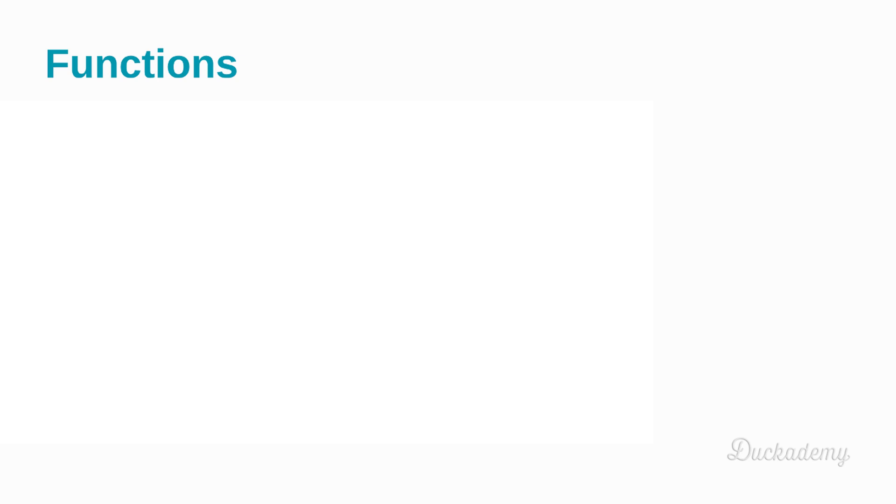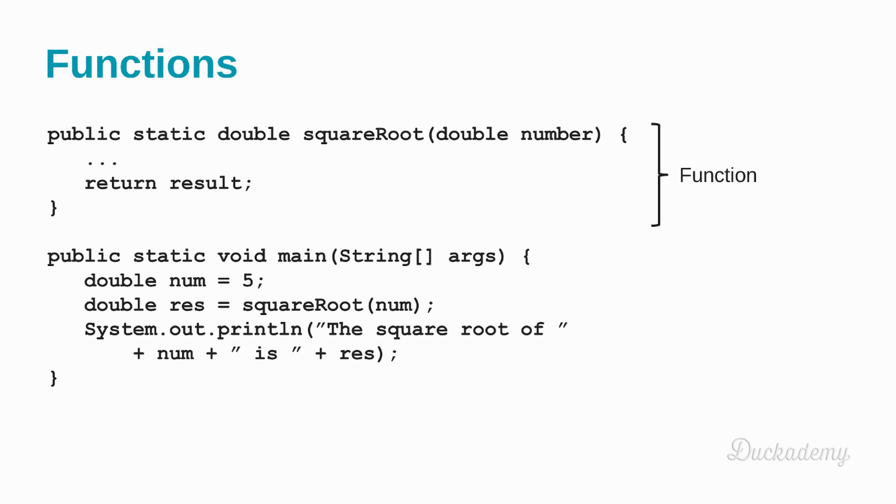So, how to create functions in Java? These are functions. This is a square root function, which produces the square root of a number. And as you might see and now understand that the main is a function as well. So, both of them have names. Square root and main are the names. Both of them have parameters.